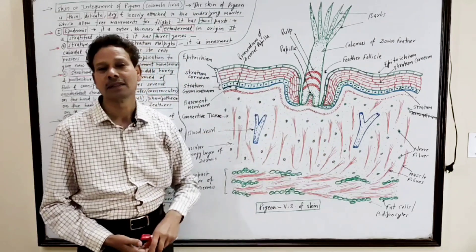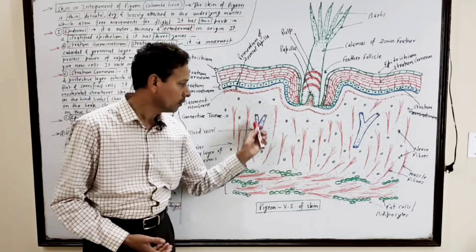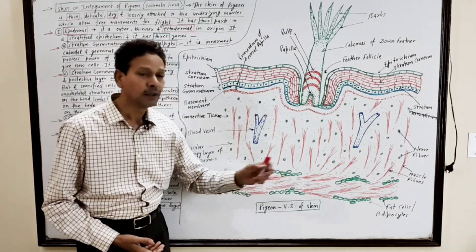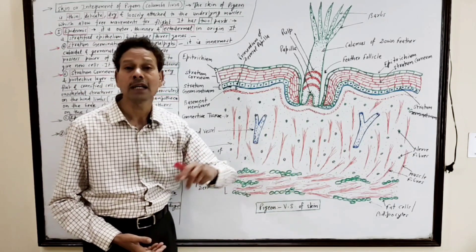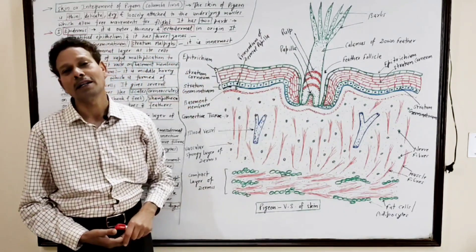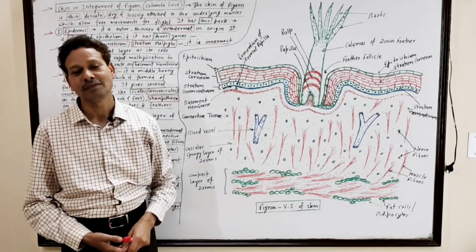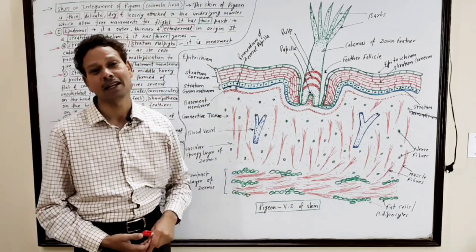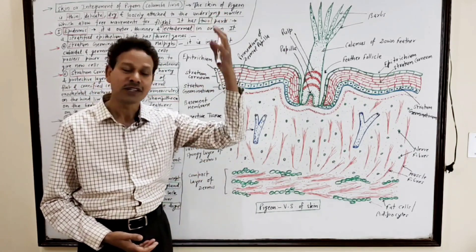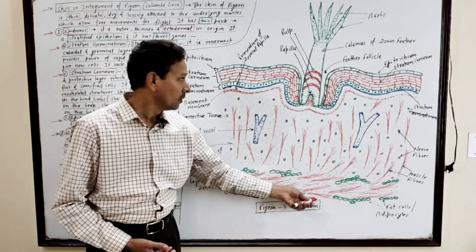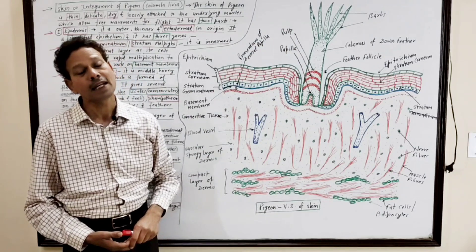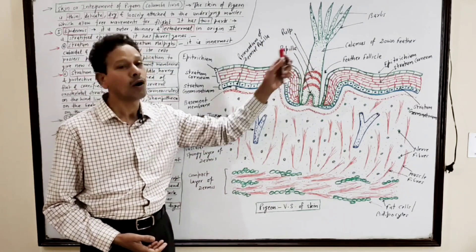The dermis is made up of loose connective tissue in the outer zone and compact connective tissue with fat cells or adipocytes in the inner zone. Notably, in the skin of pigeons and birds, there are no pigment cells or melanocytes in the skin itself — the melanocytes migrate to the scales or into the feathers.